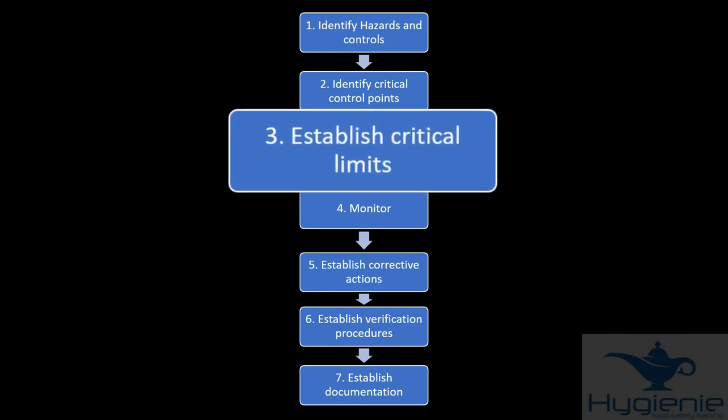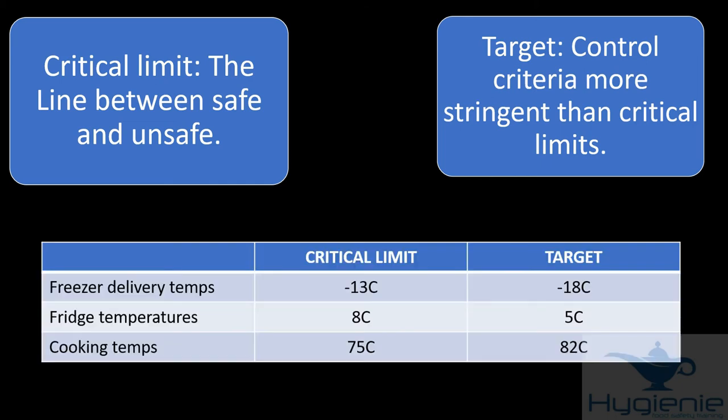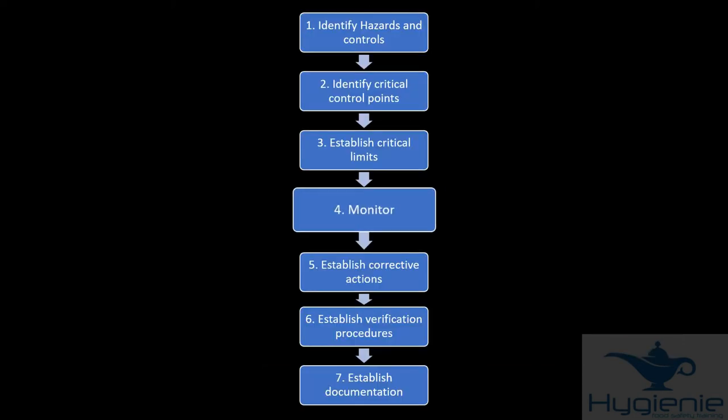Principle number three is establish critical limits. A critical limit is the line between safe and unsafe. Most companies have a critical limit and a target. A target is a control criteria more stringent than critical limits. So for example, frozen deliveries, the critical limit might be minus 13 degrees, but the target, what you're aiming for, is minus 18. Fridge temperatures, the absolute limit is 8 degrees, but the target is 5 degrees. And cooking temperatures, critical limit 75 degrees, but some companies might have a target of 82 degrees.